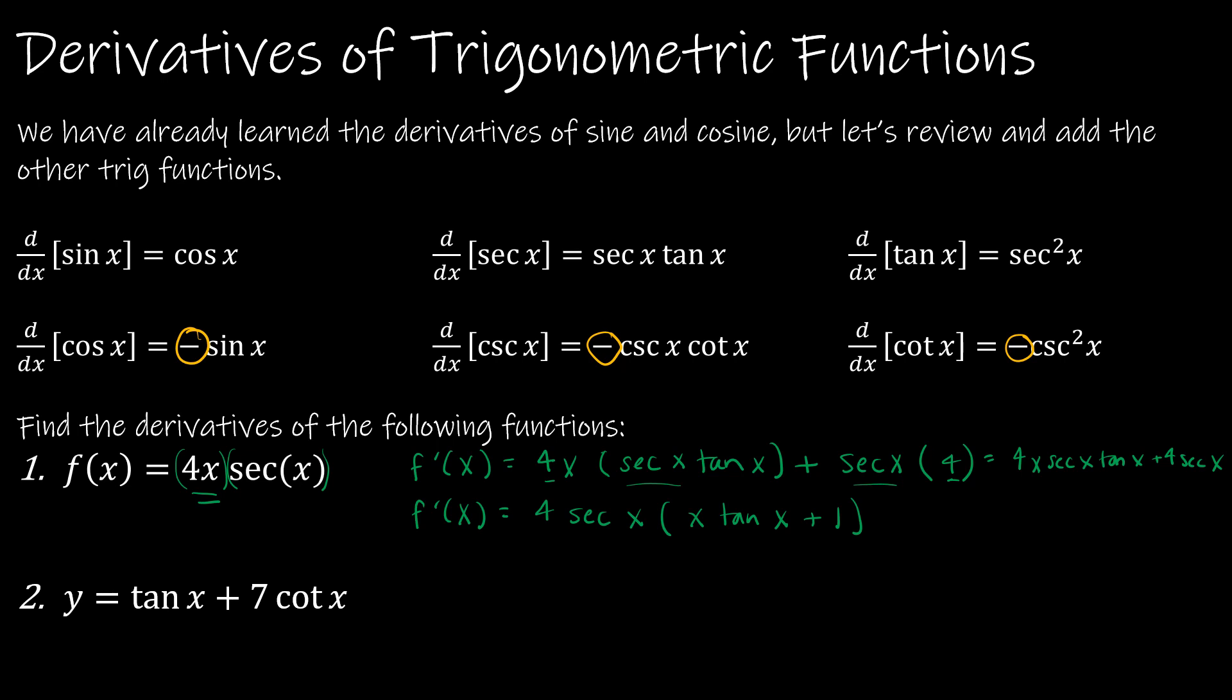I've got y equals tan x plus 7 cotangent of x. So y prime, this is not product rule, it's not quotient rule, it's just the sum or difference. So tangent of x is just secant squared x. And then 7 cotangent of x would be 7, and then cotangent is negative cosecant squared x, so minus cosecant squared x. And I would leave it just like that.